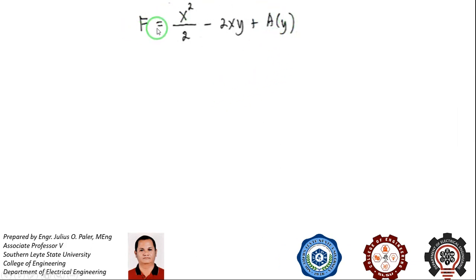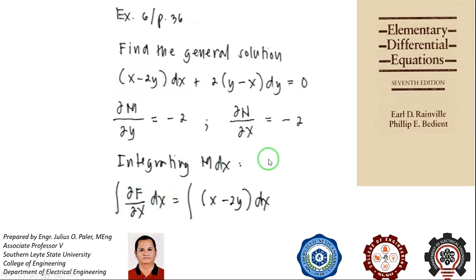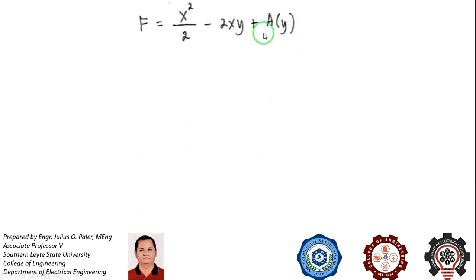This result is already our f — our solution — giving us f equals x squared over 2 minus 2xy plus a of y. We still need to determine a of y. Since M is the partial derivative of f with respect to x, and integration is the anti-derivative, integrating M dx brings us back to f, which is our solution, but we still need to find a of y.